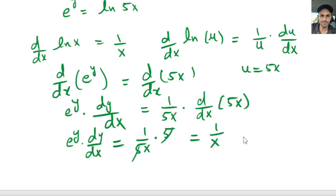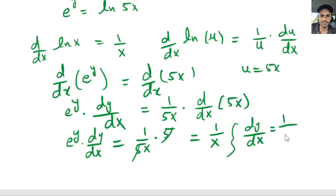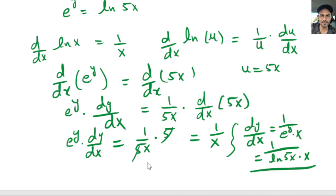This simplifies to 1 over x. Now we divide both sides by e to the y, so dy over dx equals 1 over e to the y times x. Since e to the y equals ln of 5x, our final answer is 1 over ln of 5x times x. This is the derivative of natural log of natural log of 5x.